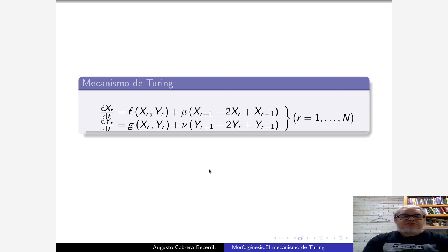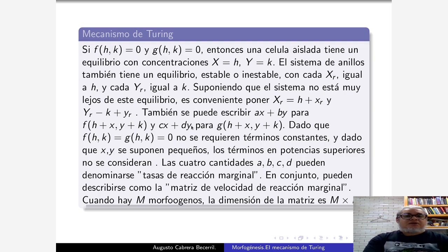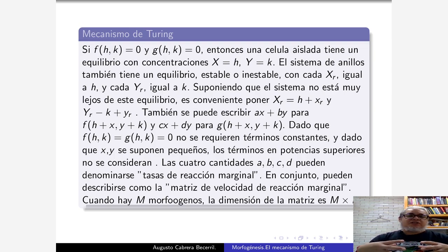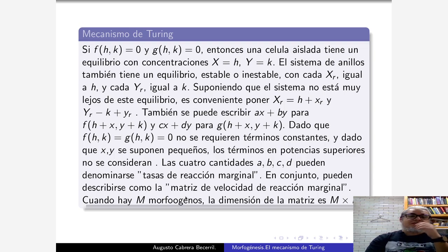Estas son las ecuaciones del mecanismo de Turing. F y G son la parte reactiva y esta es la parte difusiva. Cuando F y G son cero, una célula aislada tiene equilibrio de concentración, y el sistema es un sistema como anular. Ese sistema de anillitos va a tener algún tipo de inestabilidad de acuerdo con las cuatro cantidades A, B, C y D, que se denominan en el trabajo de Turing las tasas de reacción marginal.